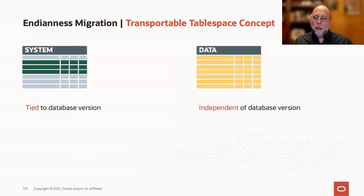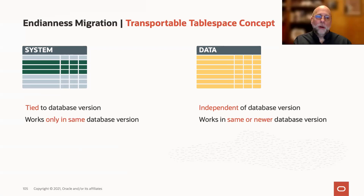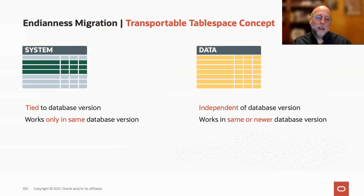If we look at the differences between metadata and data: your metadata is tied to a specific database version. What's Upgrade doing when we go to a new database version? It's modifying the data dictionary, and that can mean changing the representation of metadata for performance or functionality purposes. Your data, on the other hand, is independent of database version. While your metadata has to essentially be recreated when we're moving it with DataPump to a new version, your data will work in the same or newer database version. You could actually have a tablespace data file that's been read-only since 9.2.0.8 and still read that data in a 19C database.